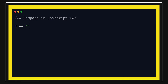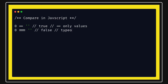Starting with very basic examples: double equals compares only value. But when we use triple equals, for example comparing zero with an empty string, it will come as false — because the type of zero is not equal to the type of empty string. That's why both are not the same for triple equals, so it returns false.